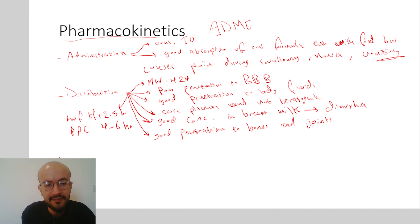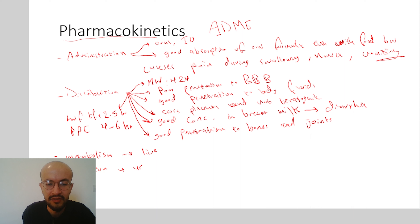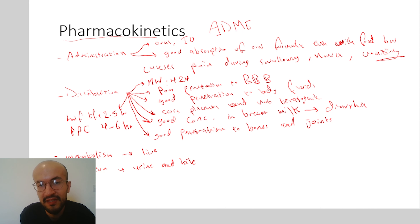The metabolism of clindamycin occurs in the liver, and excretion is through urine and bile. There is no dose adjustment needed in people who have renal failure.